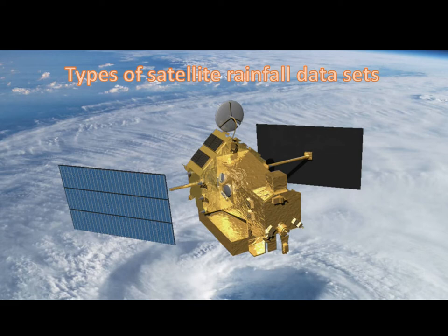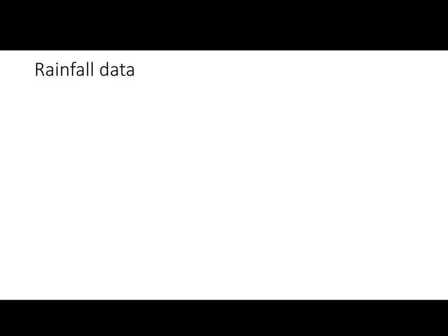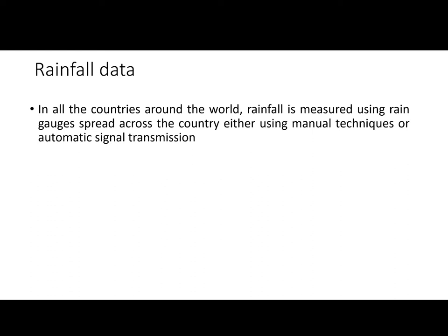In this video we will see what are the different types of rainfall datasets that are generally in use, which are found to be good for application. We will see those types and look at what are the resolutions and what are their availabilities. So let's get into it. The first rainfall dataset — as mentioned earlier, rainfall is measured using rain gauges all around the world.